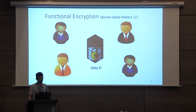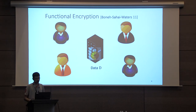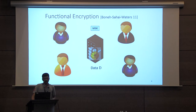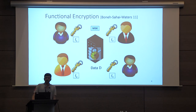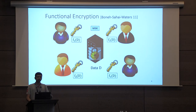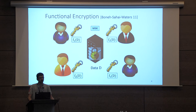Functional encryption is a generalization of public key encryption that provides fine-grained access to data. In a functional encryption scheme, the ciphertext is generated using some public parameters, and there is a master secret key associated with these public parameters. The master secret key allows you to derive function keys for various functionalities. The correctness guarantee requires that decrypting a ciphertext encrypting some data d using a functional secret key allows you to learn the output of the functionality on the underlying data, and the security guarantee is that nothing apart from the output is leaked.